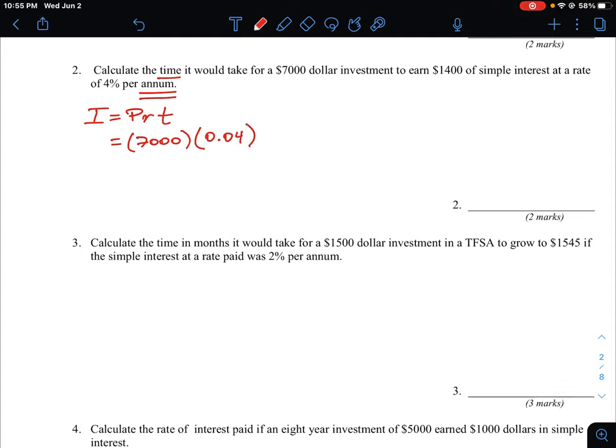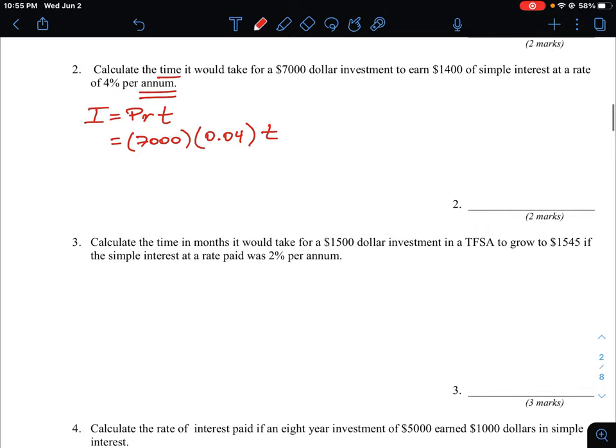And then the time is what we're being asked to solve for, so that's t. And it does tell us that the interest that we are going to earn is going to be $1400 in terms of value, so that's what I is equal to.